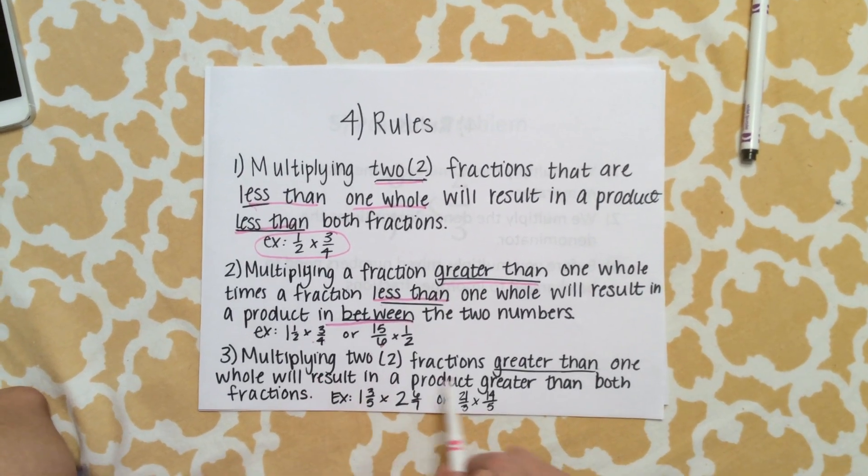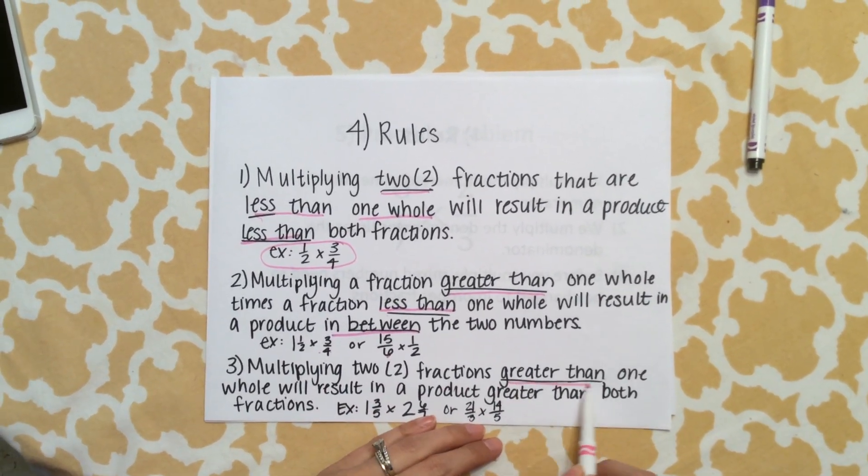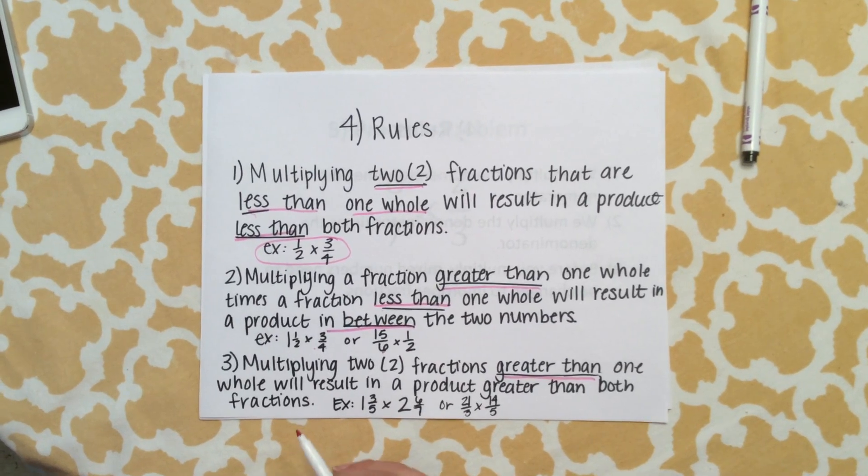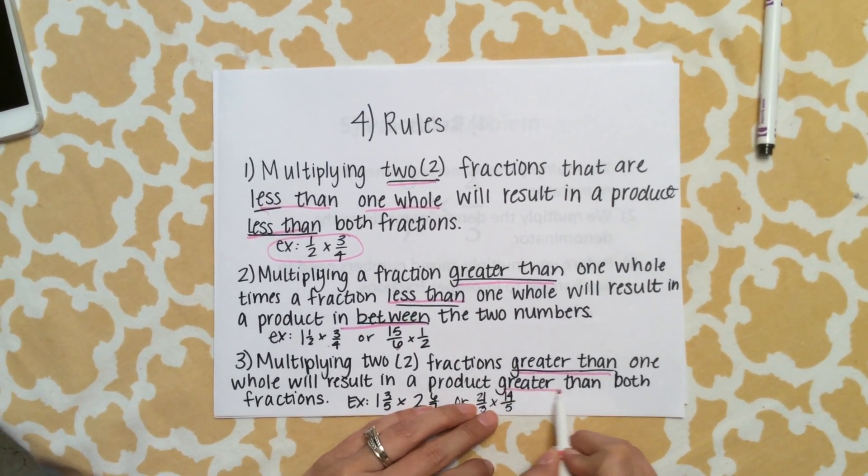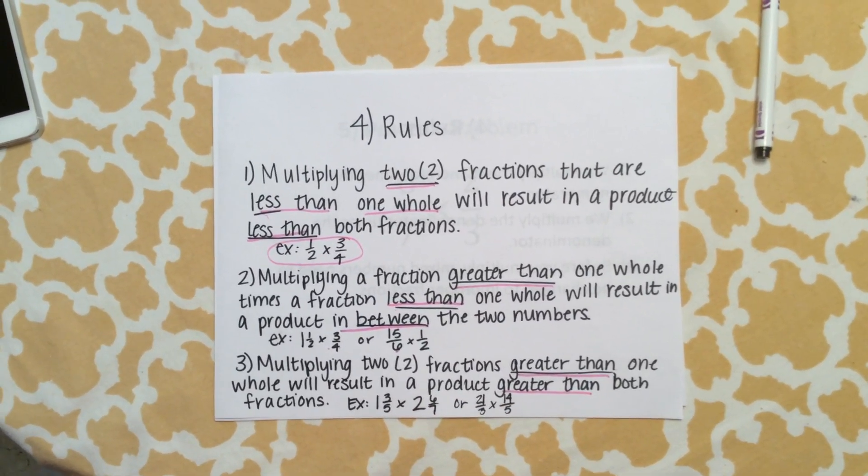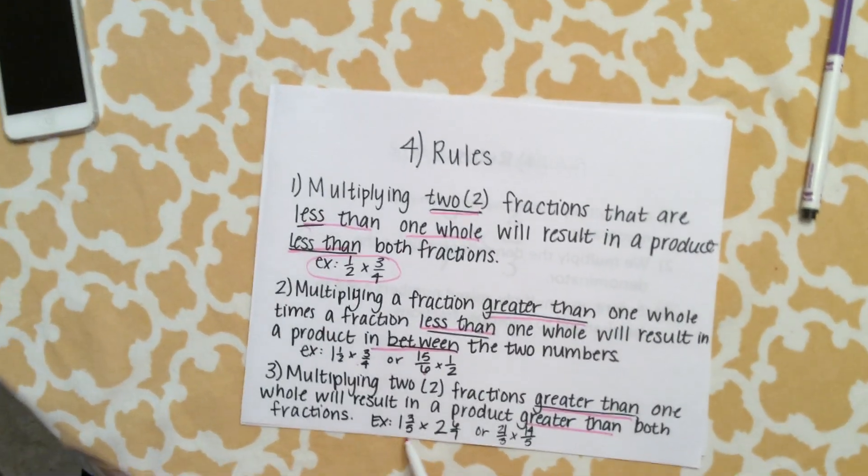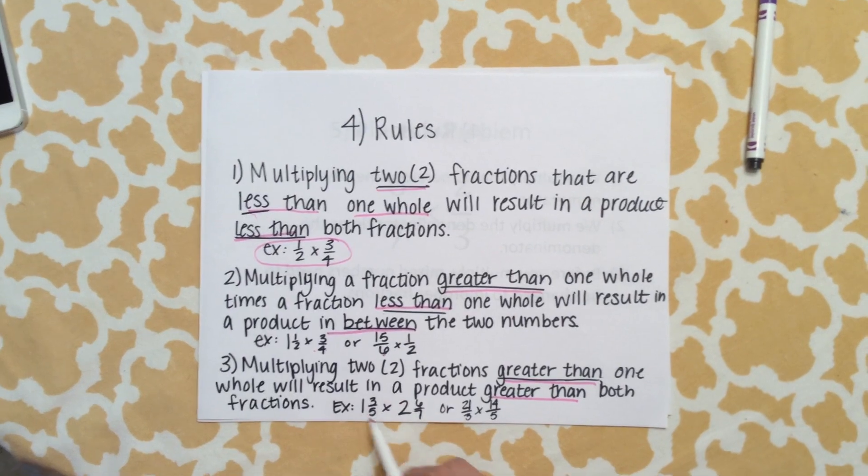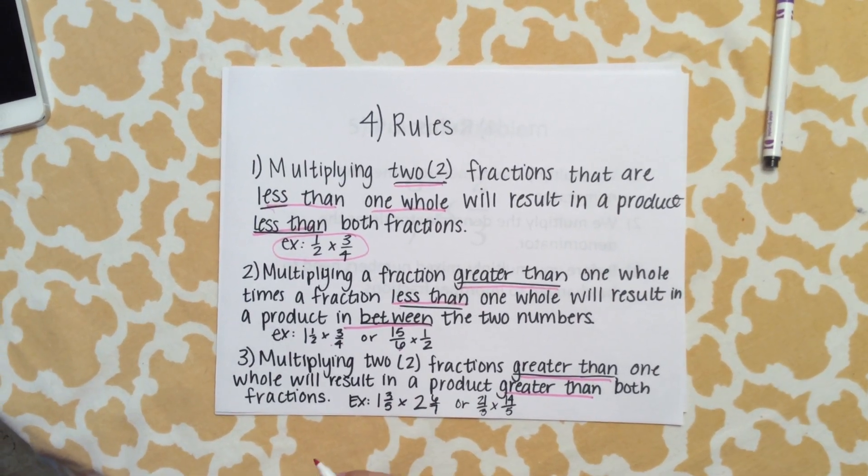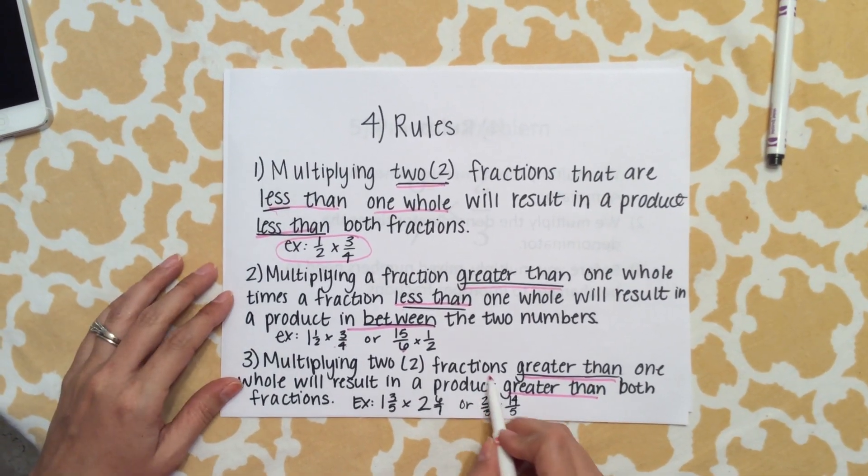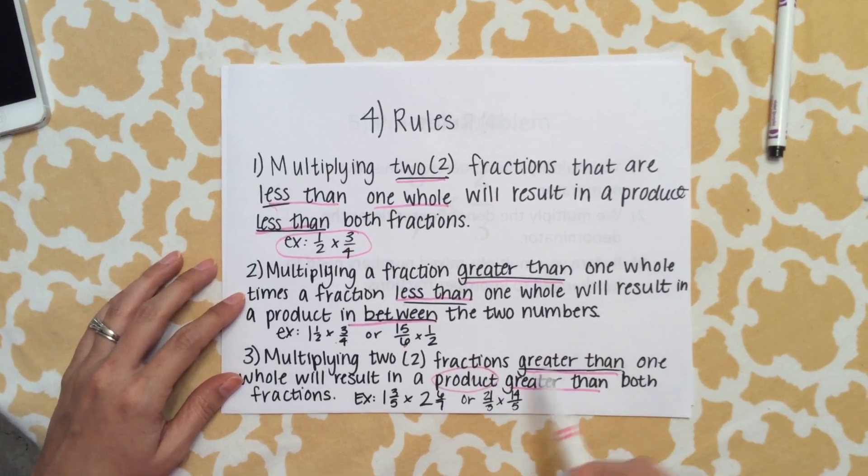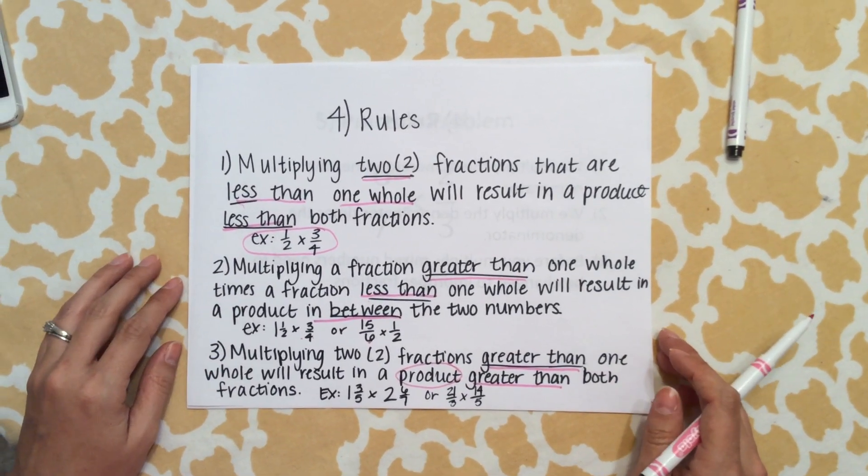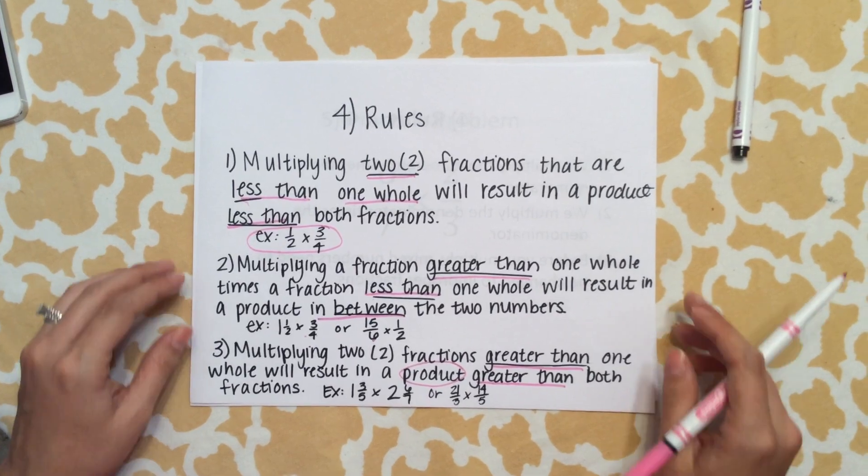The last rule: multiplying two fractions that are greater than one whole will result in a product greater than both fractions. We have a couple examples: 1 and 3/5 times 2 and 6/7 will result in a fraction larger than these numbers. Remember that product tells us to multiply, so that would be the answer to the multiplication problem. Pause your video and make sure you have all these notes written down.